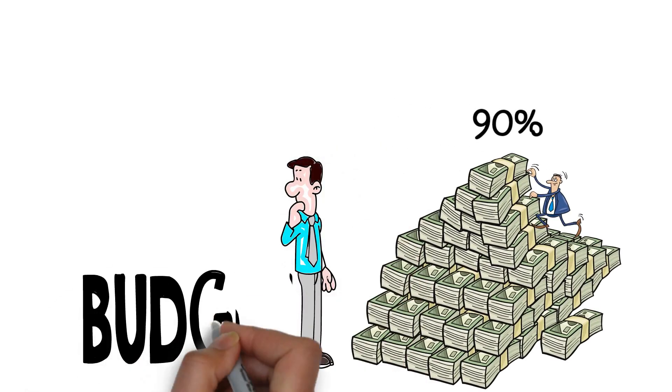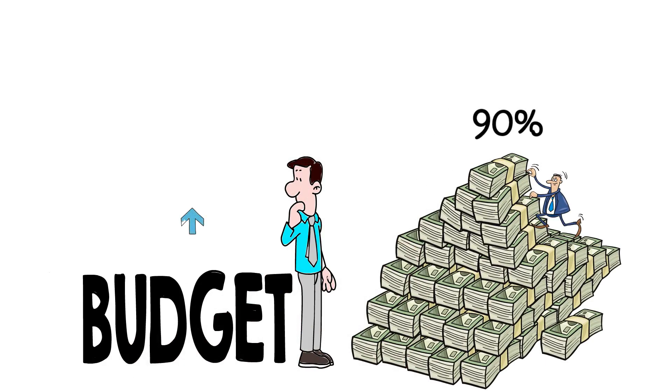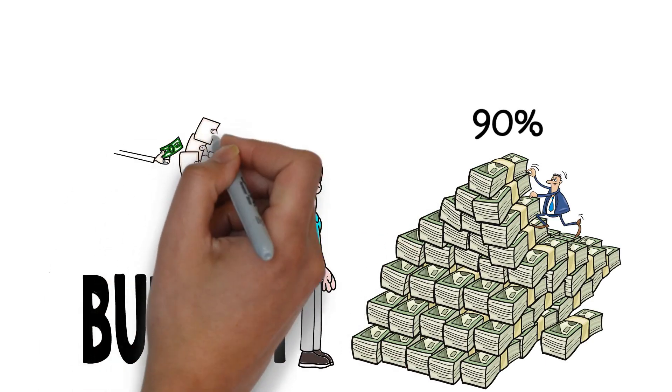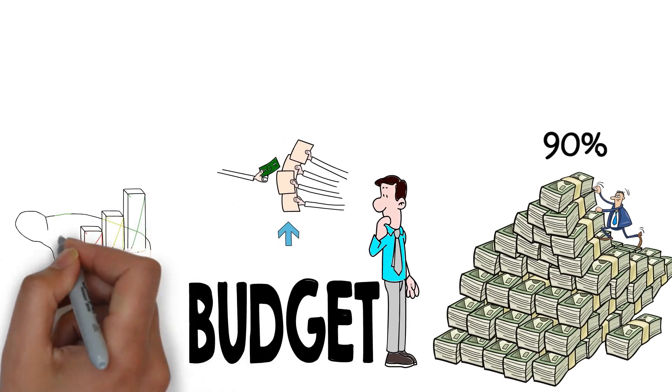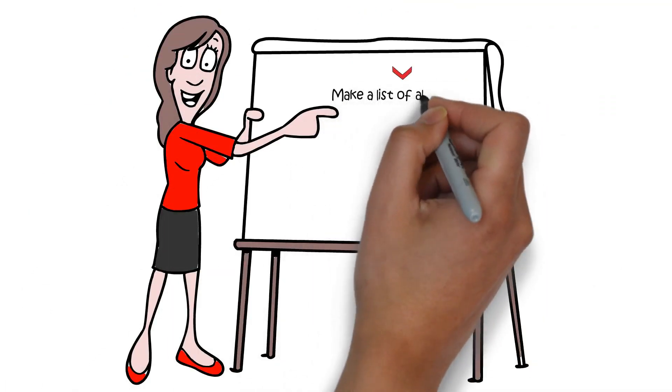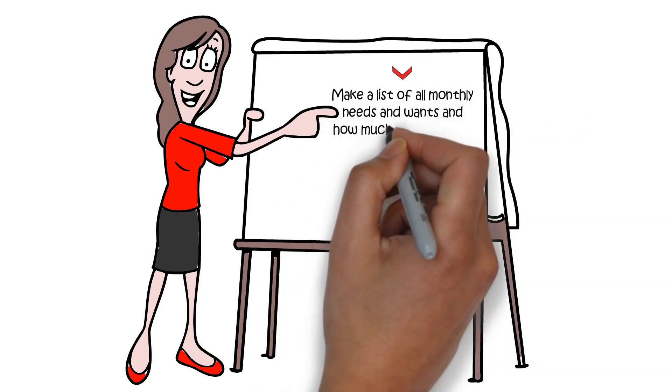This is why it's important to learn how to budget. The true goal of a budget is to help you understand your spending. Therefore, increase your savings by controlling your spending better. First, make a list of all your monthly needs and wants and how much they will cost.